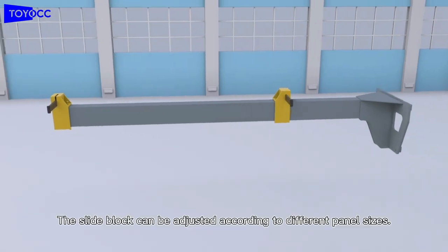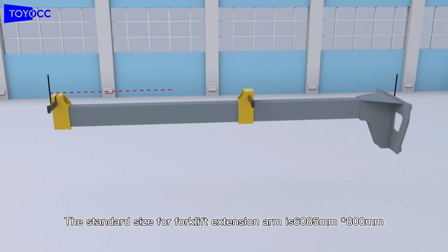The slide block can be adjusted according to different panel sizes. The standard size for forklift extension arm is 6 meters by 0.8 meters.